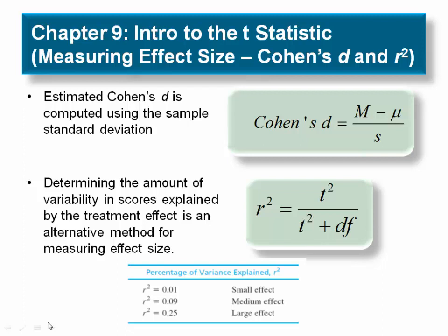Specifically, sample size, or n, is not a component of the Cohen's d formula, and while degrees of freedom is included in the r-squared formula, its relation with sample size has a minimal impact on the r-squared value generated.